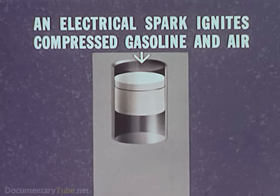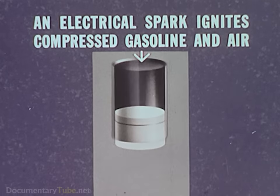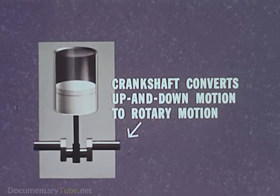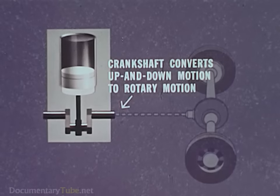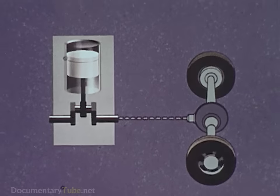Inside the cylinder, an electric spark ignites the compressed gasoline and air, and the hot gases from the explosion push the piston downward. The piston rod is connected to a crankshaft, which converts the up and down motion into rotary motion. The crankshaft then drives the rear wheels through various machinery, which we'll see later.